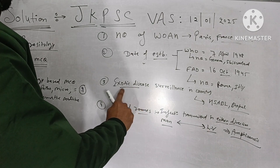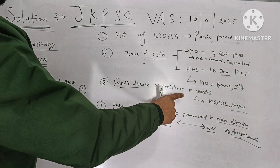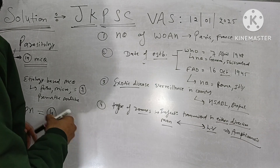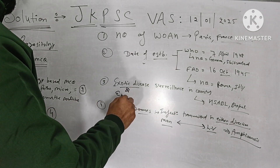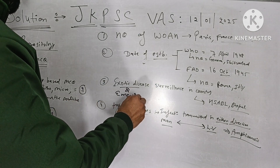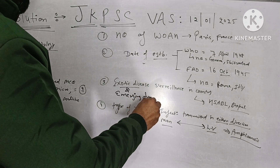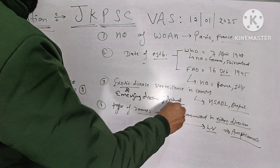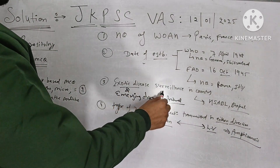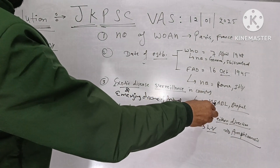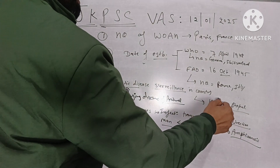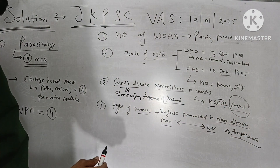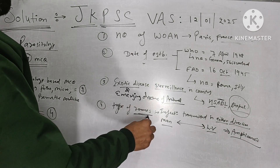The next MCQ was related with epidemiological surveillance of exotic diseases in the country — specifically exotic and emerging diseases of animals. The surveillance of exotic and emerging diseases of animals is conducted by the High Security Animal Disease Laboratory, which is located at Bhopal.